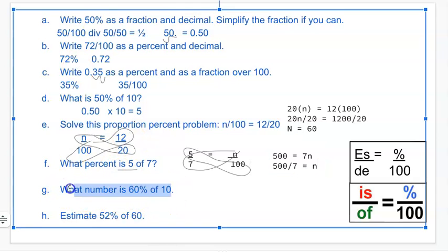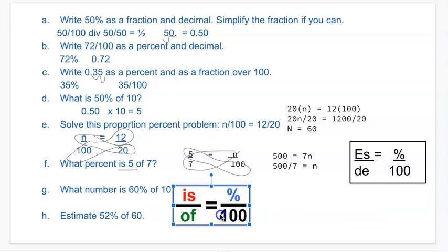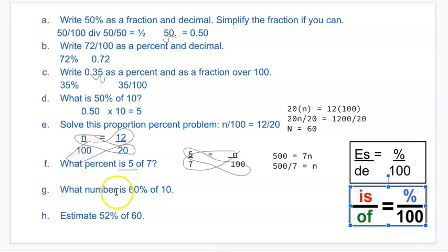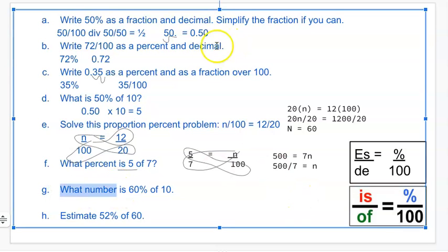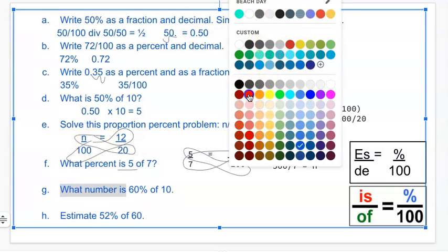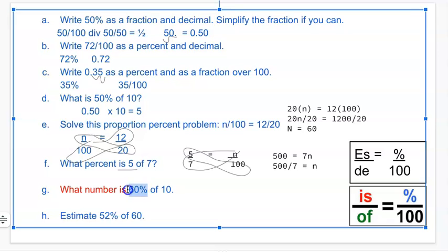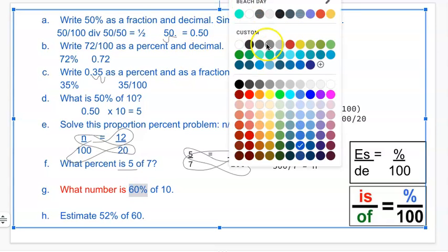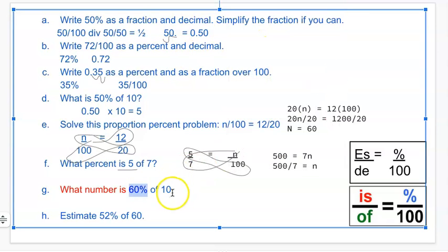What number is 60% of 10? So we're going to use the is of part here to do that as well. What number is what we're trying to find out, so that would be the red. 60% is the decimal, so that would be the blue. Of 10 is the green. So we can just use this and create our fractions.